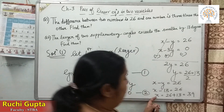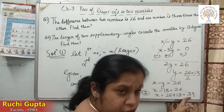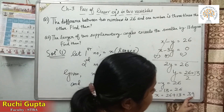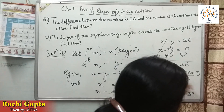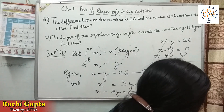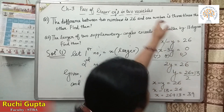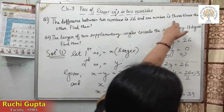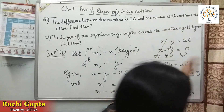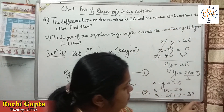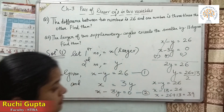So our two numbers are 39 and 13. We took X as the larger number and its value is 39, and Y is 13. You can verify: 39 is indeed 3 times 13, so our condition is true — one number is thrice the other.